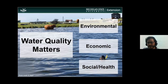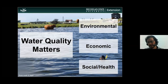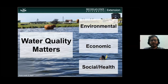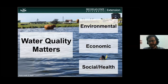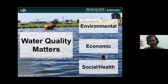Water quality matters on many different levels. Broadly speaking, environmentally, the better the water quality, the better the habitat is for the different organisms that live and reproduce in those systems. If habitats are intact, the system is in better condition, and you have the water quality needed for those species to thrive.